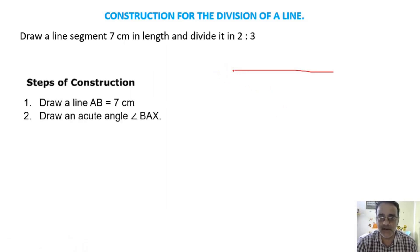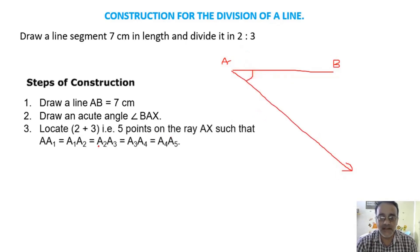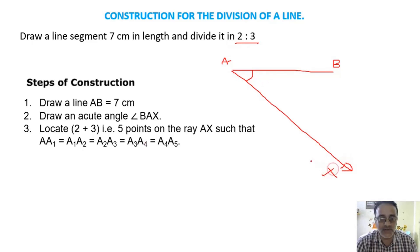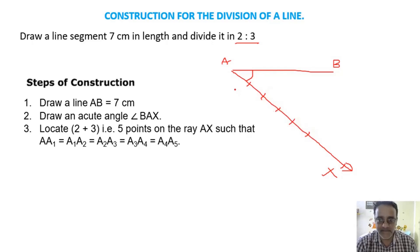After that we will draw an acute angle. This is AB. Then we will draw an acute angle. This is an acute angle. The sum of ratio is 5, that is why we will divide AX into 5 equal parts. So let us start from this: 1, 2, 3, 4, 5. This is A1, A2, A3, A4, and A5.